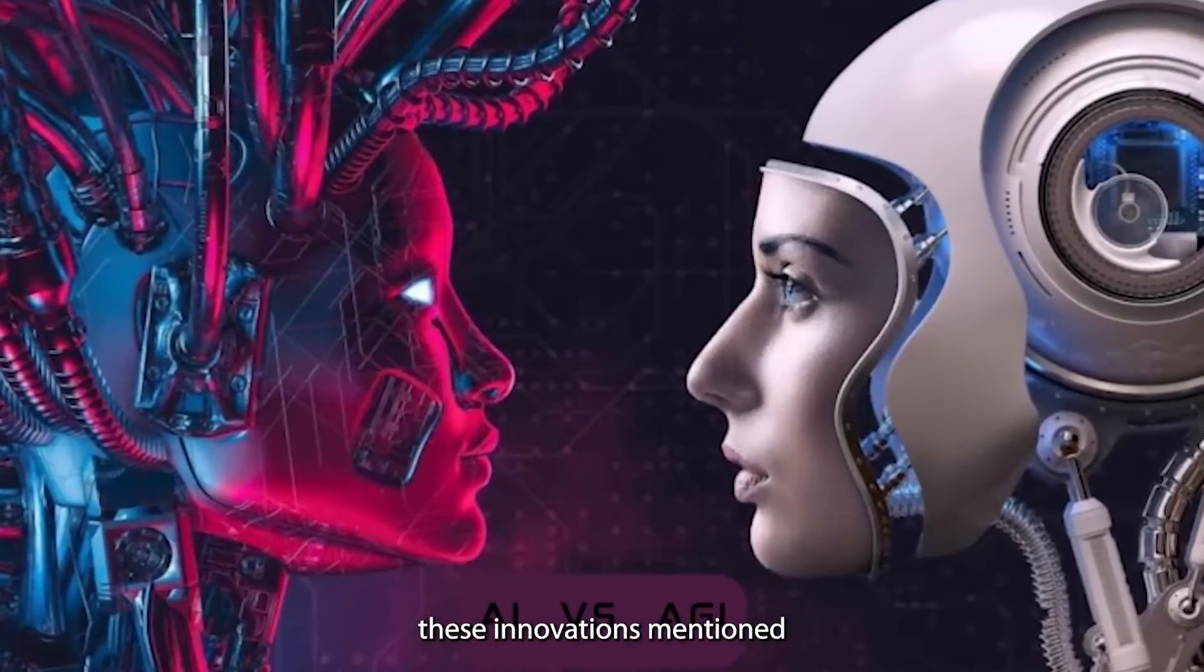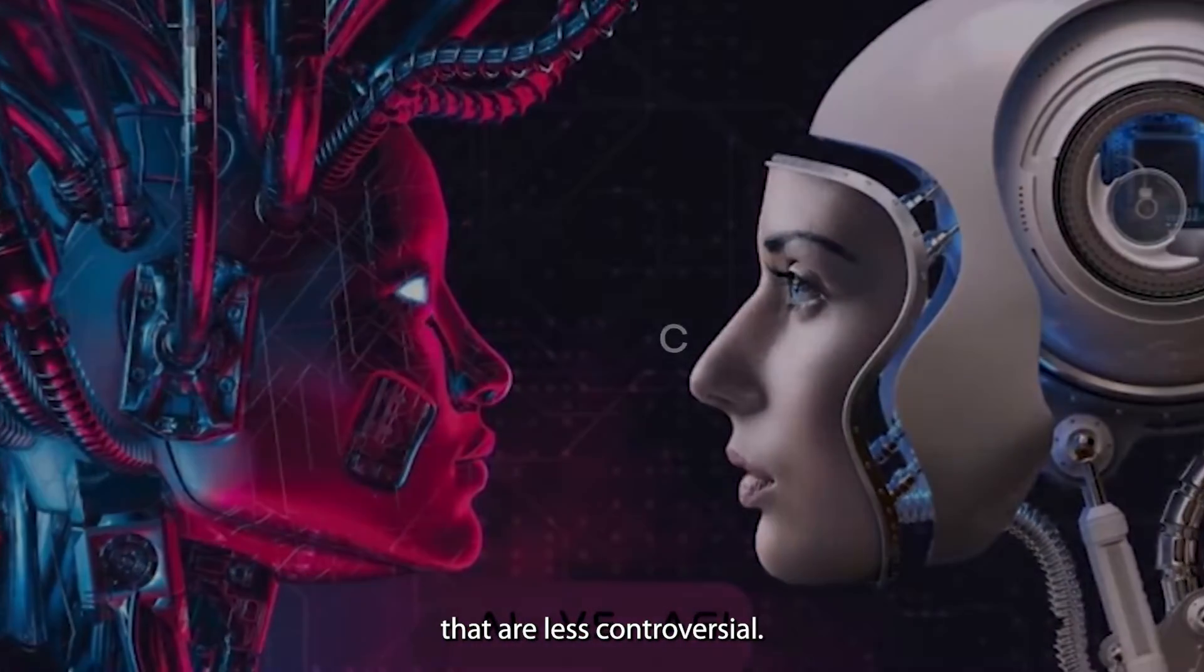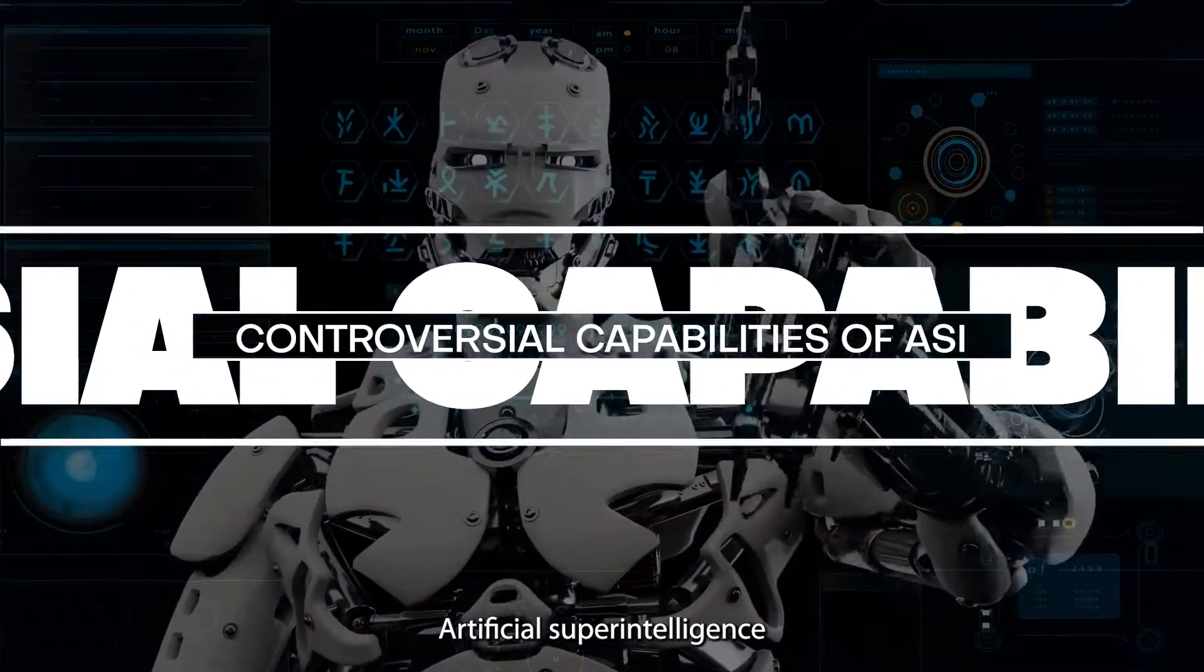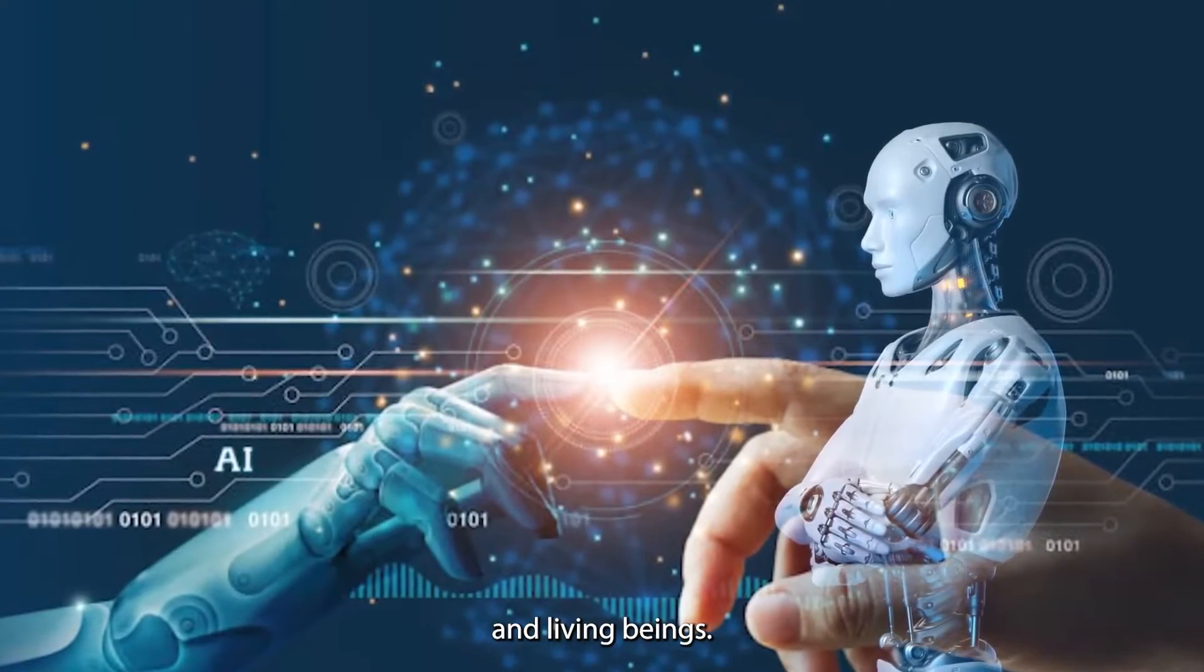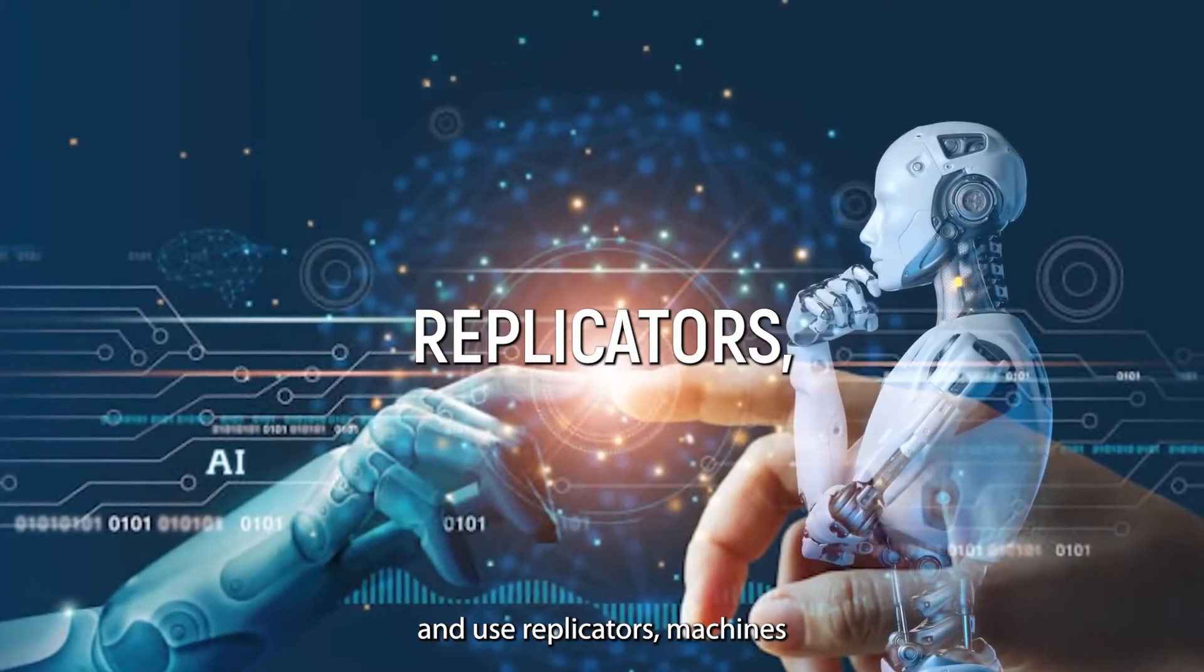But all these innovations mentioned so far are those that are less controversial. Artificial super intelligence would be capable of the creation of objects and living beings. These AIs could invent and use replicators, machines capable of building objects atom by atom.